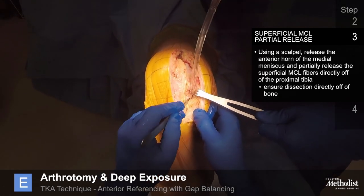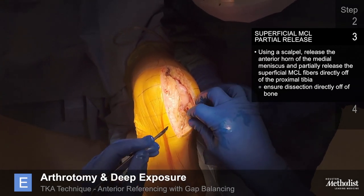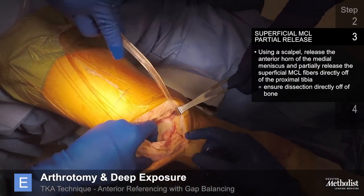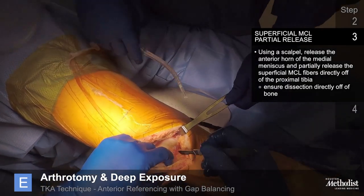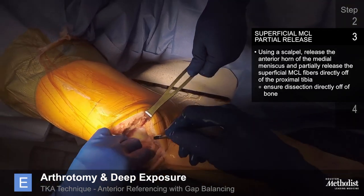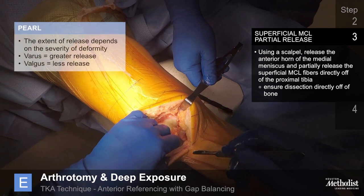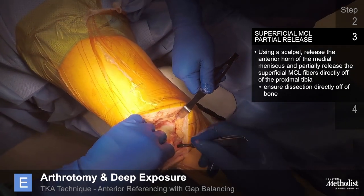Using a scalpel, release the anterior horn of the medial meniscus and partially release the superficial MCL fibers directly off of the proximal tibia. Once this is done, extend the knee. A small right-angle retractor can be placed to retract the entire medial meniscus and MCL sleeve, ensuring dissection is directly off of the tibial bone. The extent of the MCL release depends on the deformity; a general rule is to carry out this dissection to the mid-coronal plane of the tibia. More severe degrees of varus malalignment will require more release of the MCL sleeve. In a valgus knee, the MCL dissection is kept to a minimum. Release the fat pad from the proximal tibia.